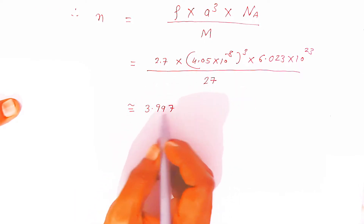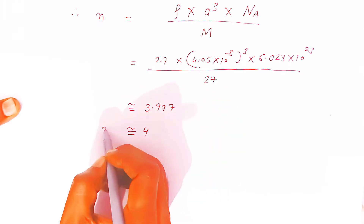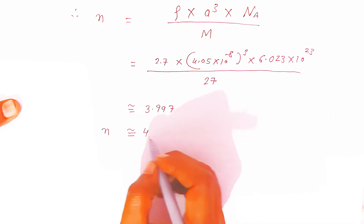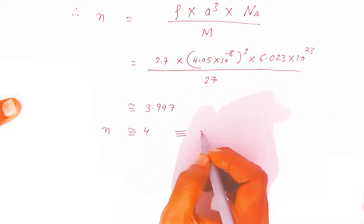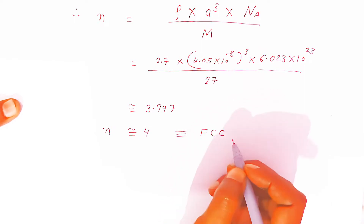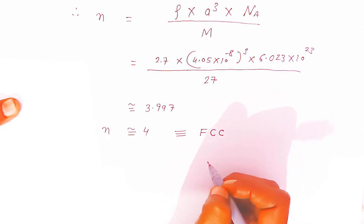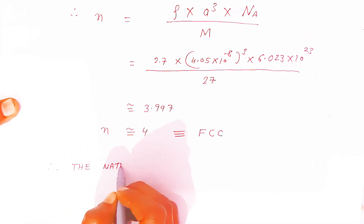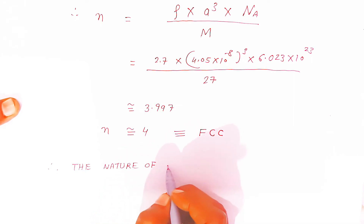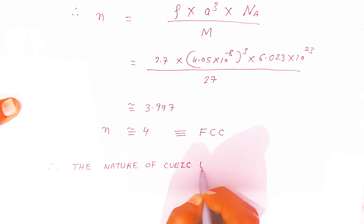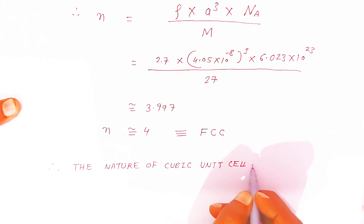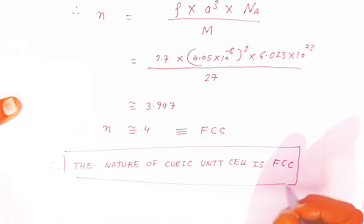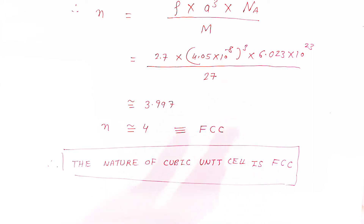Since the number of atoms n is nearly equal to 4, this corresponds to a face centered cubic structure (FCC). So the nature of the cubic unit cell is FCC — face centered cubic structure. This is the answer. Write it this way in the examination and you will get full marks. This is a 3 mark question.